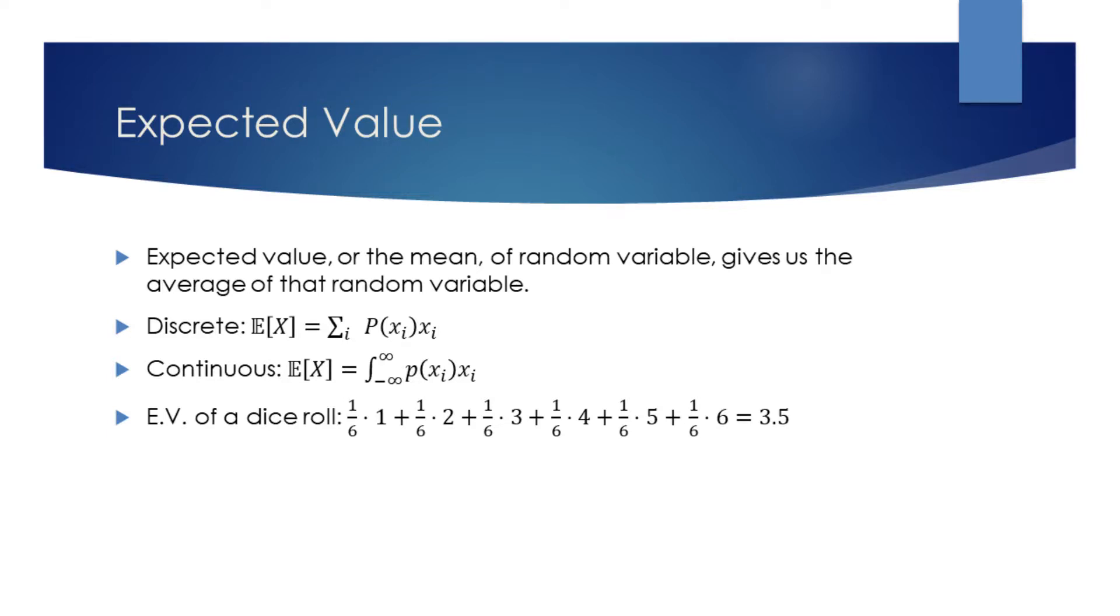Expected value, or the mean, of a random variable, gives us the average of outcomes for that variable.